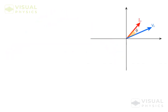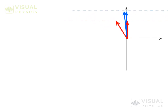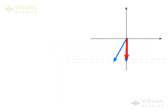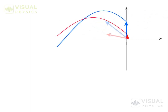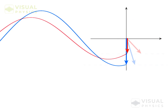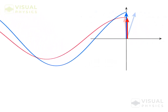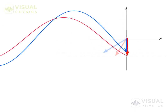If current leads voltage by a phase Φ, then the amplitude vector of current is ahead of the amplitude vector of voltage by a phase Φ. And graphically, current will be shifted towards the left by a phase Φ.